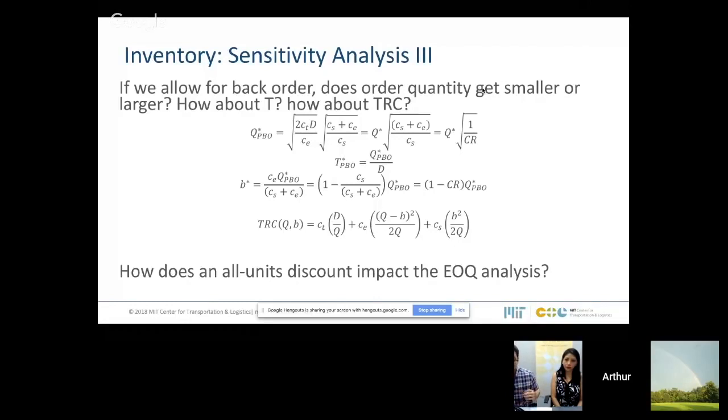Imagine my optimal order quantity was more than a thousand, like 1200. I'm already in the discount region and I'm enjoying the discount that supplier gives me. So this discount will only drive my cost down. It will not affect my optimal order quantity. I will still stick with the 1200 and enjoy the discount.